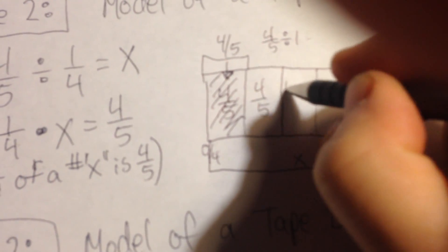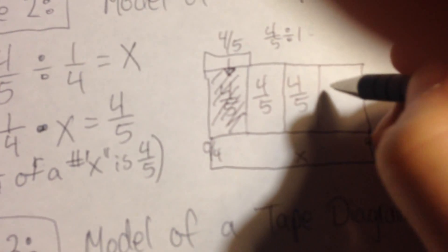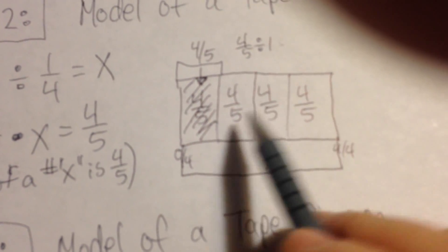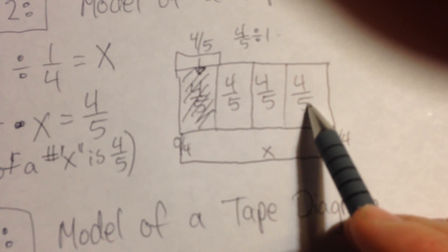So I have four-fifths, four-fifths again, four-fifths again, and four-fifths again. So I have four groups of four-fifths.